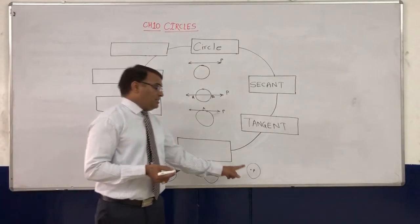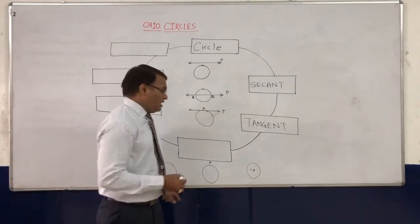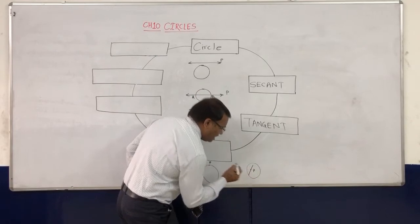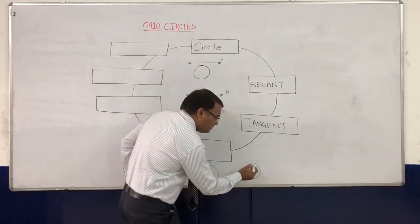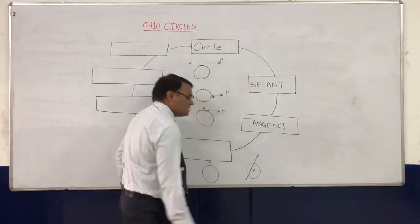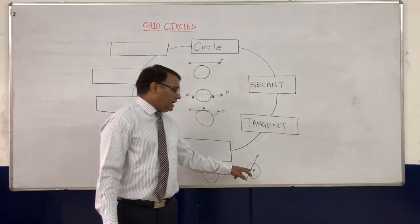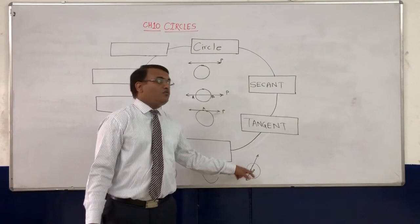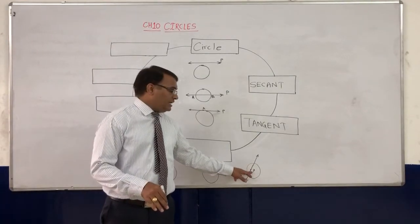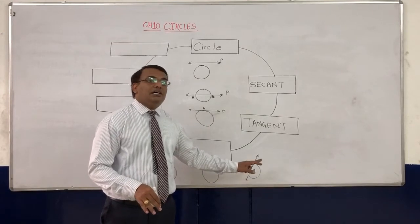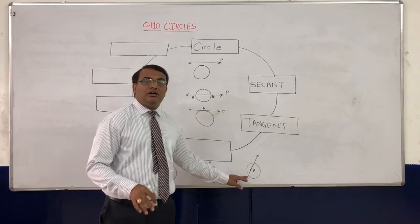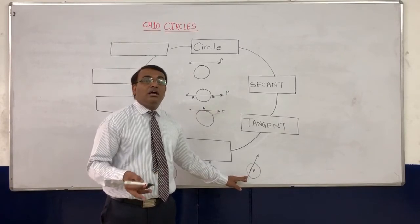In case one, where the point is lying inside the circle — if we draw any line from that point — it will intersect the circle at two points. So it won't be a tangent, because two times it is intersecting the circle, so it becomes a secant. Therefore, when a point is inside the circle, there is no tangent.